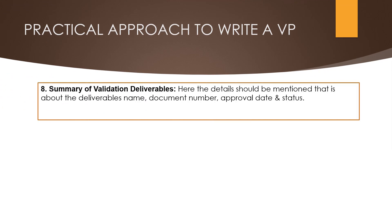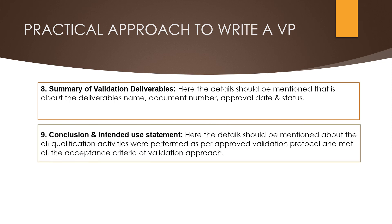The eighth component is the summary of validation deliverables. Here details should be mentioned about all deliverables — name, document number, and approval date. The ninth component is the conclusion and intended use statement. Here the details should mention that all qualification activities were performed as per the approved validation protocol and met all acceptance criteria of the validation approach.